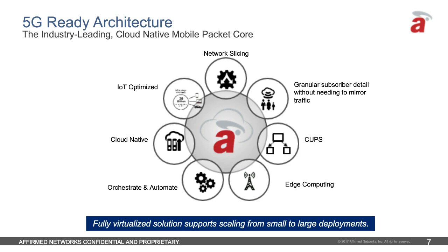Orchestration and automation become ever more important as you have more different kinds of things, more instances, more locations, and more services overlaid. The goal is to orchestrate in an automated fashion and reduce the amount of human intervention required to create new services, locations, and slices, as well as to lifecycle manage them — not just creation, but ongoing lifecycle management. This becomes ever more important in new network topologies.